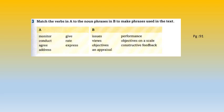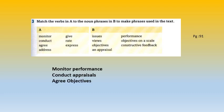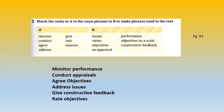Now that you've matched A with B, let's check the answers. You monitor performance — check how everybody's doing. You conduct appraisals — the process itself, 'conduct' means to do it. You agree objectives — and remember, you can say 'agree objectives' or 'agree on objectives,' both are correct. You address issues — solve the problems. You give feedback — you can also get feedback; you give if you're doing the appraisal and get if you're the appraisee. You rate the objectives on a scale — that's the scoring system from 1 to 4. And you express your views. This is an important exercise; you need to know how to use those expressions.